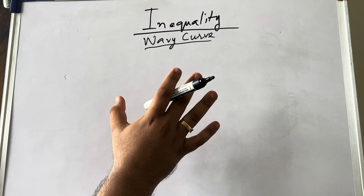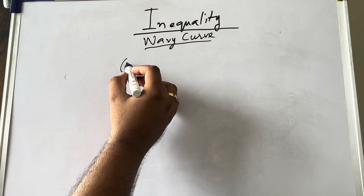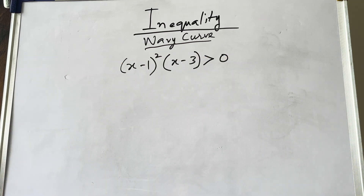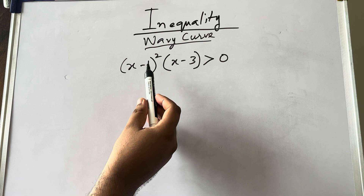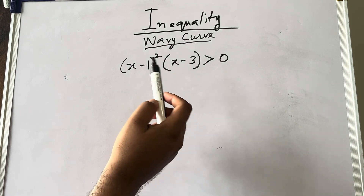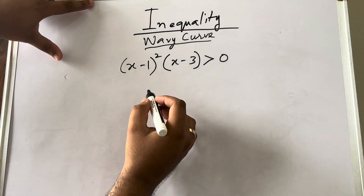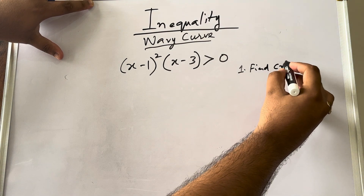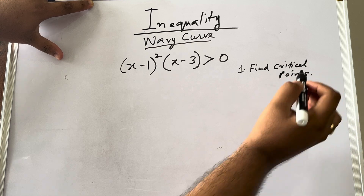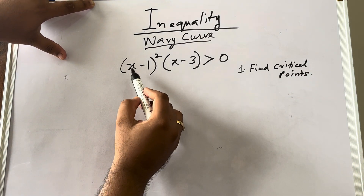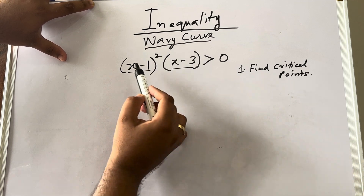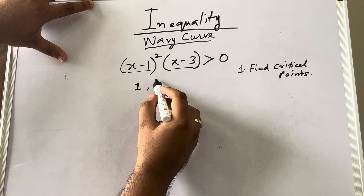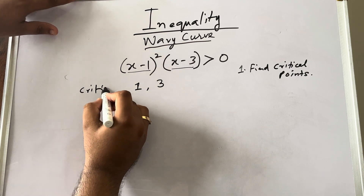I will start by taking a very simple example. Say for example somebody is asking you to solve: (x − 1)² × (x − 3) ≥ 0. Find the values of x for this question. The first thing you have to do is find the critical points. You equate each factor to zero — equating (x − 1)² to zero gives x = 1, and equating (x − 3) to zero gives x = 3.